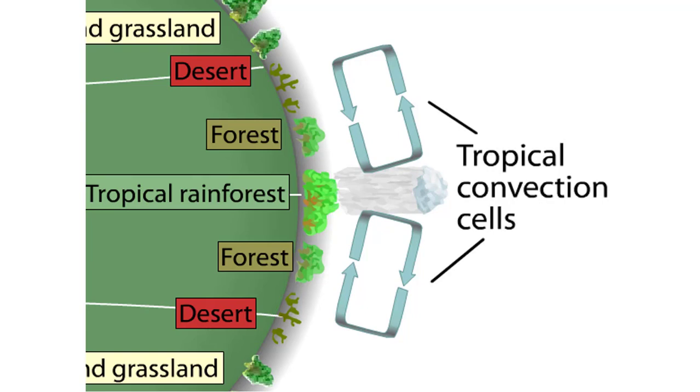In addition to the tropical convection cells, Earth has convection cells at the poles.